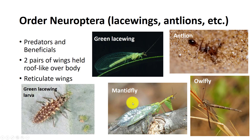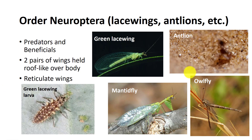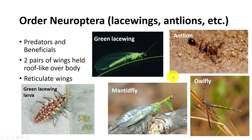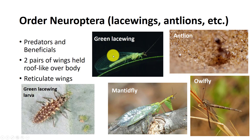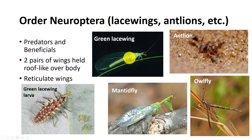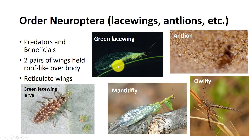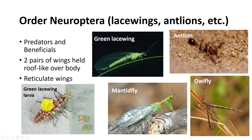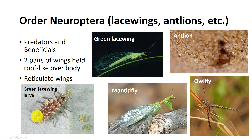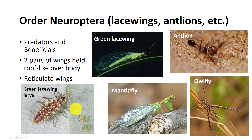The insect order Neuroptera, or net-wing insects, include lacewings, mantidflies, antlions, and their relatives. Adult neuropterans have four membranous wings, all about the same size with many veins. The wings are often held roof-like over their body. They have chewing mouthparts and undergo complete metamorphosis. The larvae of most families are predators, eating aphids and other pests. Some are used for biological control.